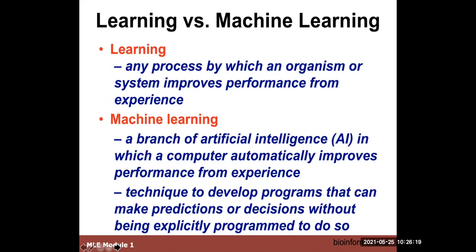So, some definitions: learning versus machine learning. Learning is something we all do — we're organisms, and what we'll hopefully do after this two-day course is improve our performance in coding and understanding machine learning through experience — listening to lectures and doing labs. Machine learning is different. It's not done by living systems; it's done by computers. It's a sub-discipline of artificial intelligence or AI. Essentially, a computer automatically improves its performance from experience — the computer develops programs that can be used to make predictions or decisions. What's really special is that you're not coding it explicitly; you're building a framework that allows it to generalize and make predictions.